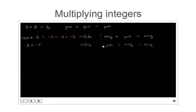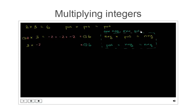Both of these cases — negative times positive, and positive times negative — are the same thing with the order switched. In both, exactly one of the two numbers is negative, and so the product will be negative.